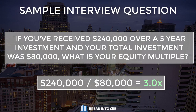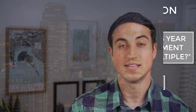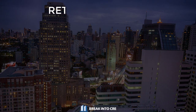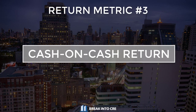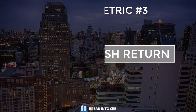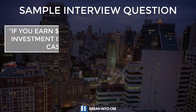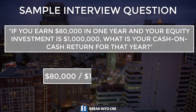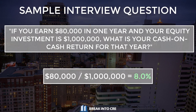And finally, the last return metric is the cash on cash return. The cash on cash return is just an annual net cash flow number divided by your equity invested in the deal. So if you have a year where you earn $80,000 and you've invested $1 million of equity, then your cash on cash return for that year would be 8%.